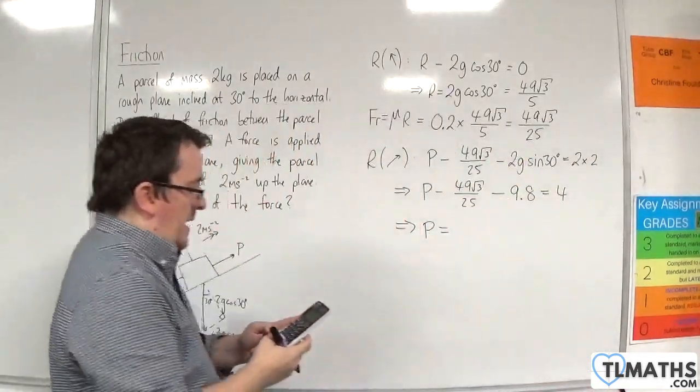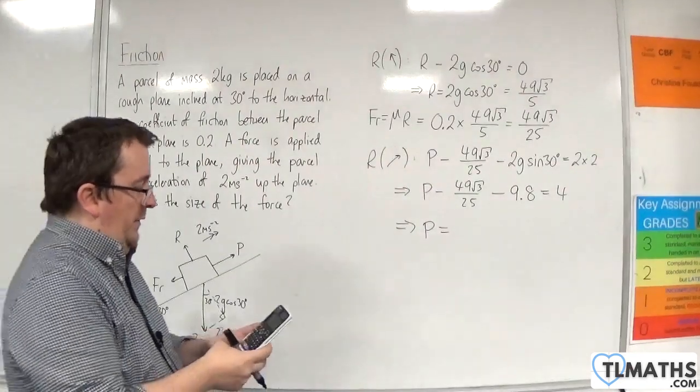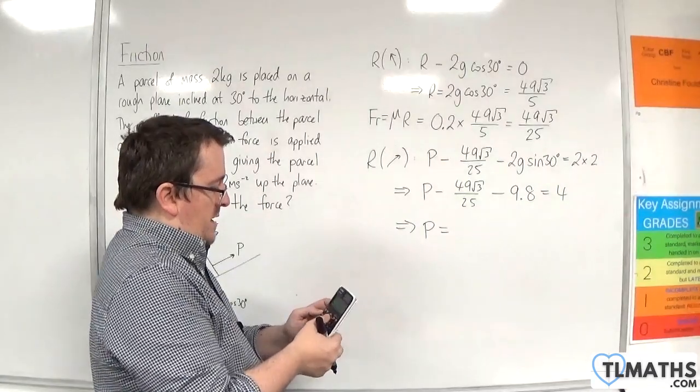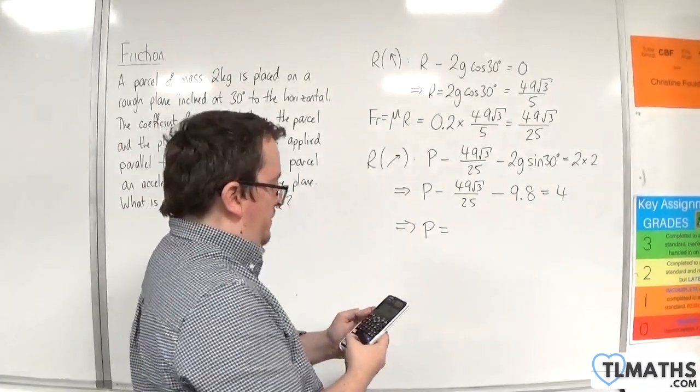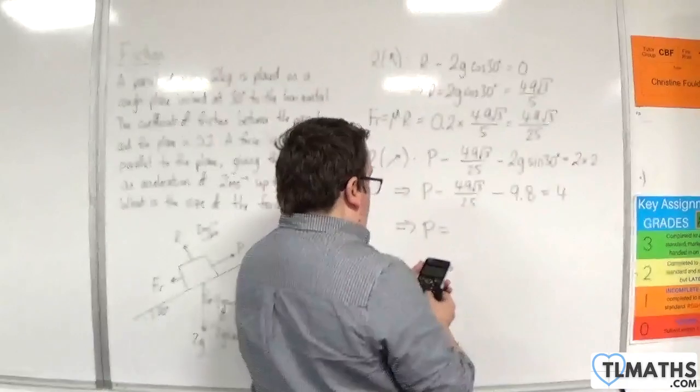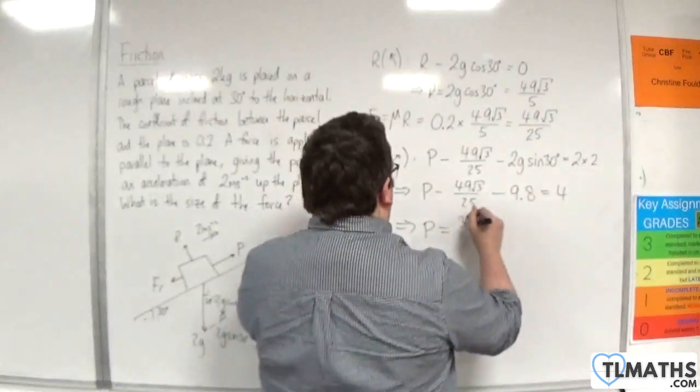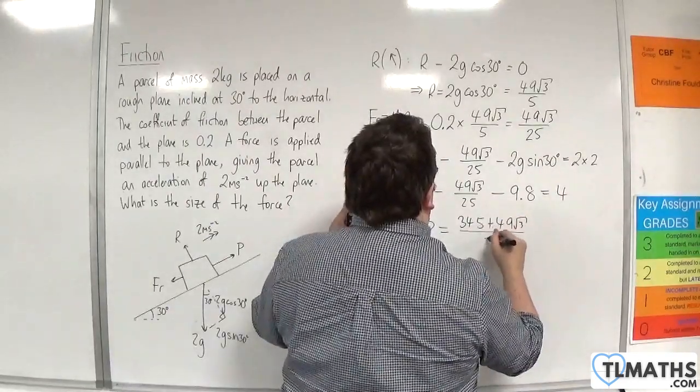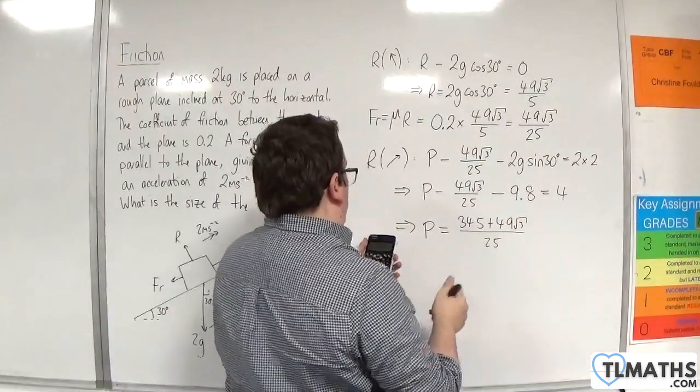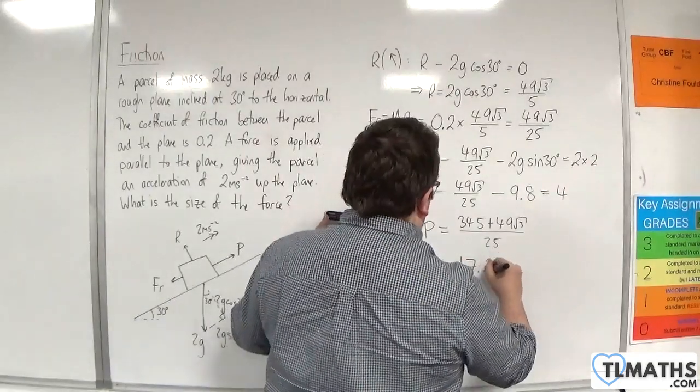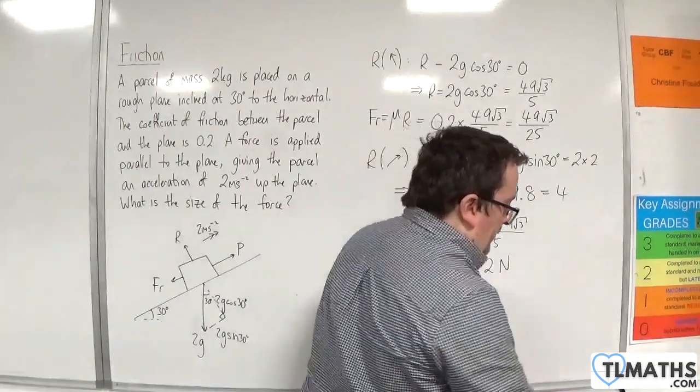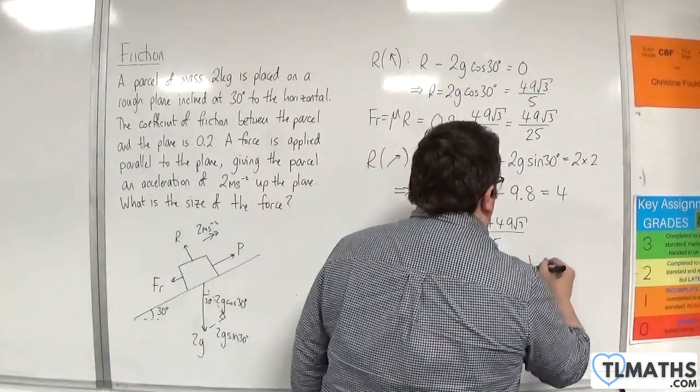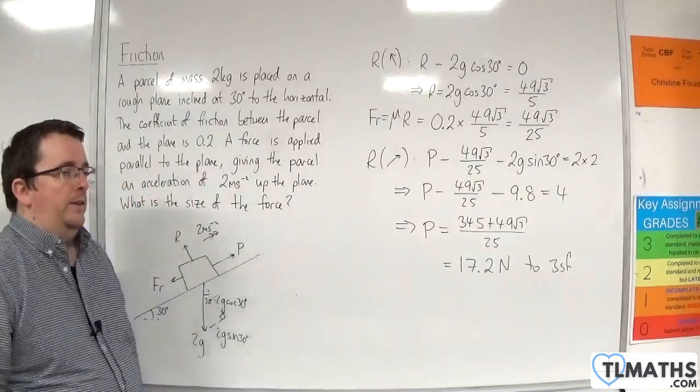P is 4 plus the 9.8 plus 49 root 3 over 25. And that gets me, well, my calculator's actually giving me an exact answer: 345 plus 49 root 3 over 25, which to three significant figures is 17.2. So it's 17.2 newtons to three significant figures.